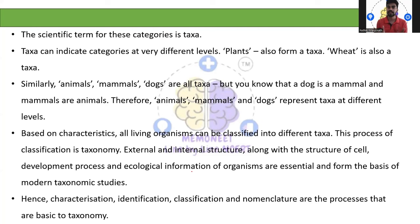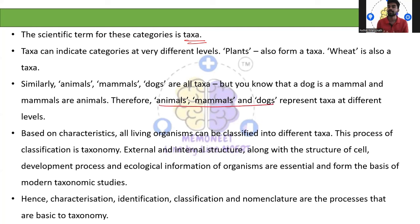The scientific term for these categories is taxa. Taxa can be indicated at different levels. For example, plants form a taxa, wheat is a taxa, rice is a taxa, mammals is a taxa, and dogs — they all represent a specific taxa. We know that dog is a mammal and mammals are animals. Therefore, animals, mammals, and dogs represent taxa at their own different levels. Based on characteristics, all living organisms have been classified into different taxa.